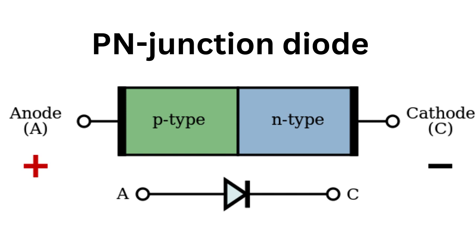On the other hand, when a negative voltage is applied to the P-type side of the diode and a positive voltage is applied to the N-type side, the depletion region becomes larger and current is unable to flow through the diode. This is known as reverse bias.